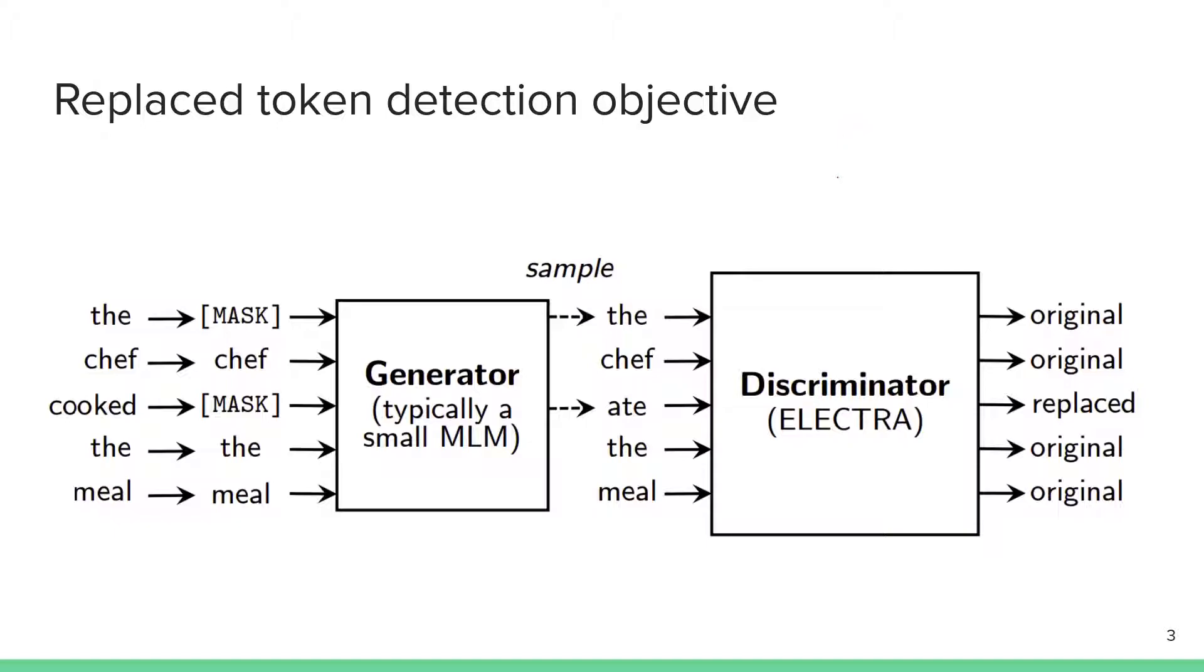This gives you a brief overview of this ELECTRA approach. The generator and discriminator are trained jointly together on large amounts of raw text. Then once you pre-train using this objective, you take the discriminator only, the features learned, and similar to BERT, RoBERTa, XLNet, you fine-tune them on some classification or whatever task, some natural language understanding task.